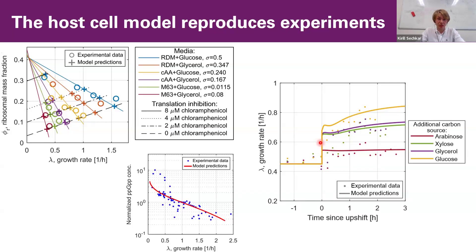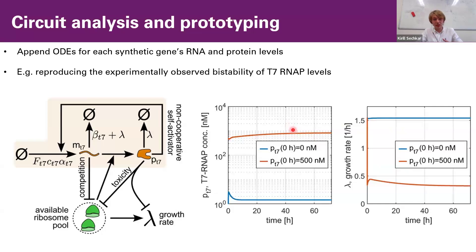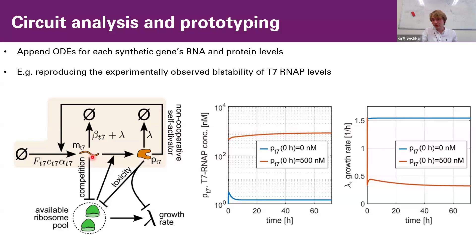So we have something that captures host cell physiology quite well. How does it help us with synthetic gene circuit design? First, you can just simulate circuit performance by appending the relevant ODEs — that is, an ODE for each synthetic gene's mRNA and protein levels — to the cell model. As an example, we can consider the case of a T7 RNA polymerase that transcribes its own gene. It has been shown experimentally that depending on the initial condition, it can have two possible stable steady states, which is indeed what we see in our model simulations.